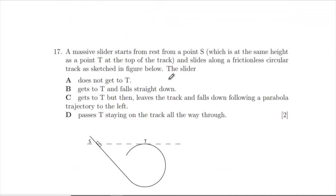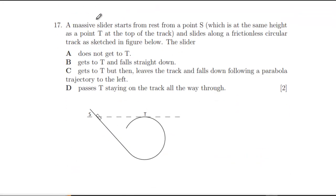Question 17: A massive slider starts from rest at point S, which is at the same height as point T at the top of the track, and slides along a frictionless circular track. What happens to the slider? Does not get to T, gets to T and falls straight down, gets to T but then leaves the track in a parabola to the left, or passes T staying on the track all the way through?